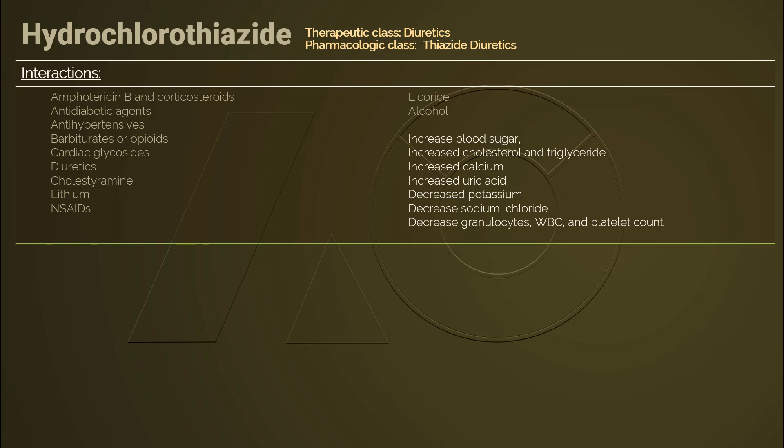Hydrochlorothiazide can be used in combination with loop diuretics to increase diuresis, or with a potassium-sparing diuretic to boost serum potassium. Cholestyramine decreases absorption of thiazides; take these two medications two hours apart. Hydrochlorothiazide interrupts excretion of lithium, increasing risk of lithium toxicity. NSAIDs increase the risk of renal failure. Licorice can lead to rapid excretion of potassium, adding risk of hypokalemia. Alcohol adds to orthostatic hypotension. Patients should avoid both licorice and alcohol during therapy.